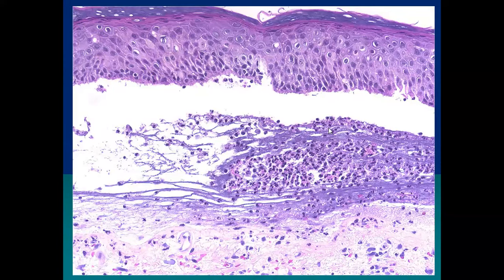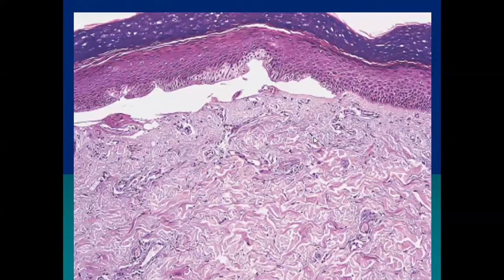In this image there is another subepidermal split with dense inflammatory infiltrate, but this time the infiltrate is mainly neutrophils. A subepidermal blister with predominant neutrophils is primarily linear IGA disease. Additional differentials include bullous SLE and the inflammatory phase of epidermolysis bullosa acquisita.